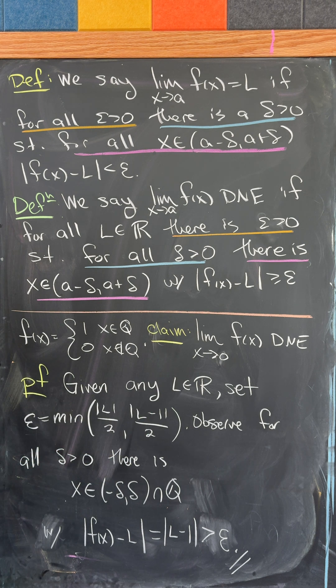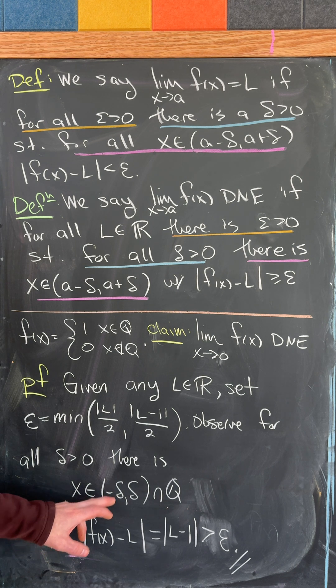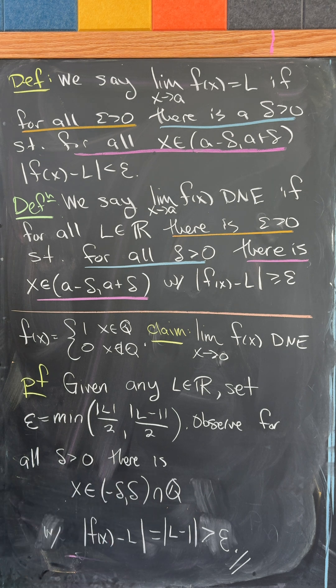Now let's take any real number l and set epsilon equal to the minimum of the absolute value of l over 2 and the absolute value of l minus 1 over 2 and then observe that we can take x on the interval minus delta to delta intersected with the rational numbers and then f of x minus l is bigger than epsilon.